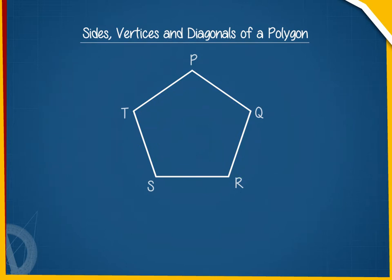Line segments PQ, QR, RS, ST and TP are the sides of the polygon PQRST.